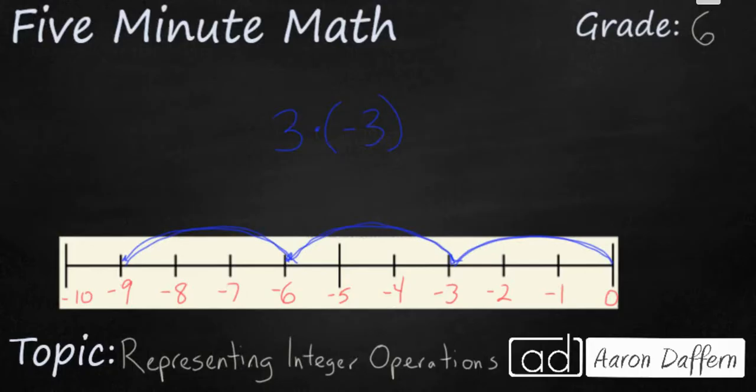I can write 3 times negative 3. Three groups of negative 3 and that's going to get me to my answer here: negative 9. Or another thing you need to keep in mind is that you don't need to have this multiplication symbol right here. You can simply use the parentheses to imply multiplication and you can write 3 parentheses negative 3. That's going to get you your same answer.